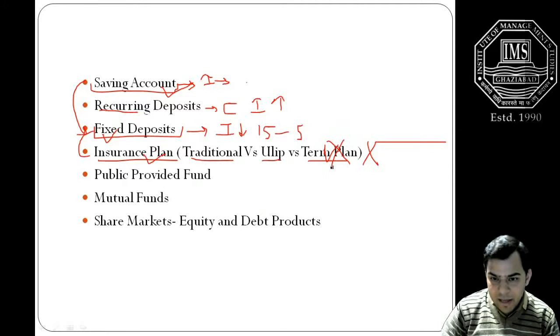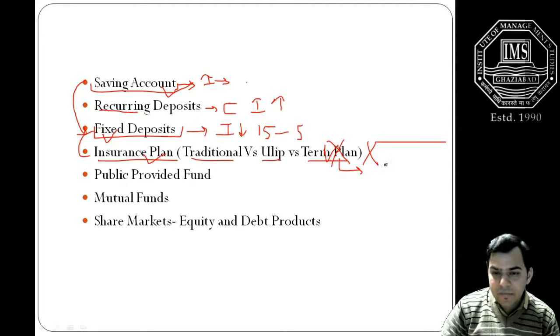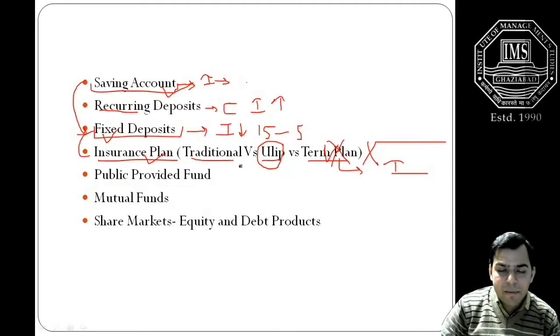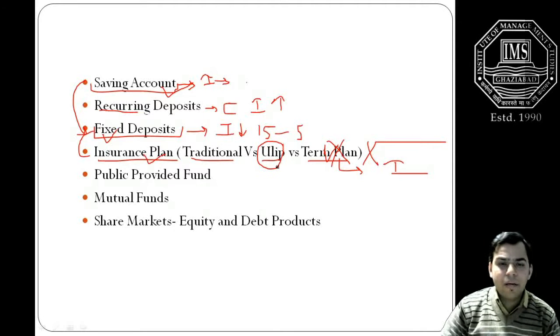And you will not earn any returns out of this. There is no return available on the term plan, but yes, if something happens in between this year, you can get higher compensation from the party from where you have taken the insurance.